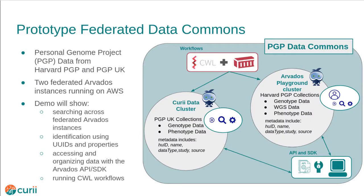Let's start with a demo of Arvados in action. The Personal Genome Project, or PGP, is a network of projects where participants have released their genetic data under consent that allows for unrestricted scientific research. The Arvados project originated from and serves as the technical foundation for the founding PGP project, Harvard PGP.